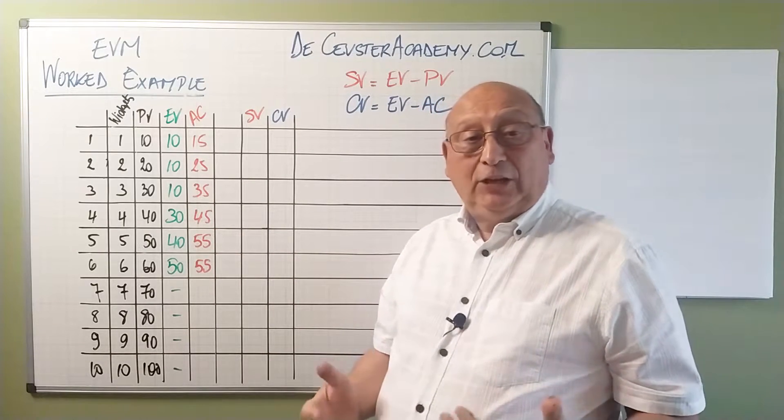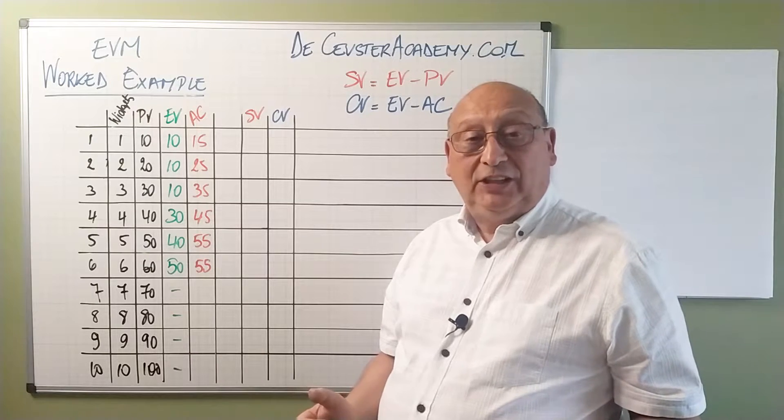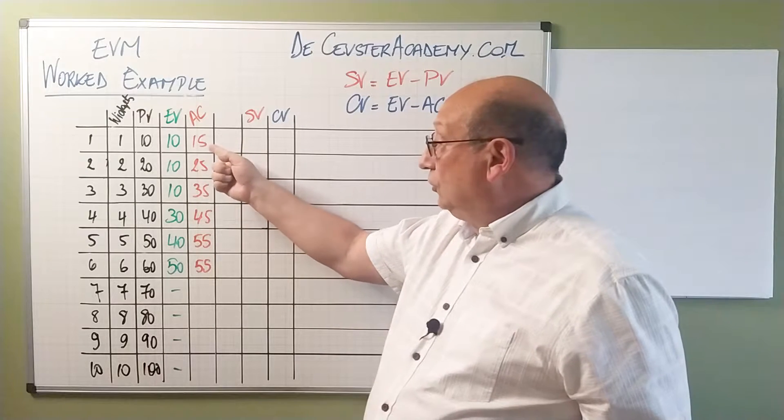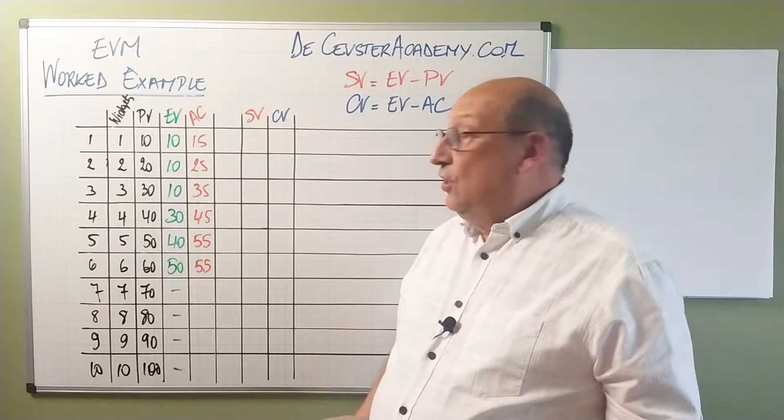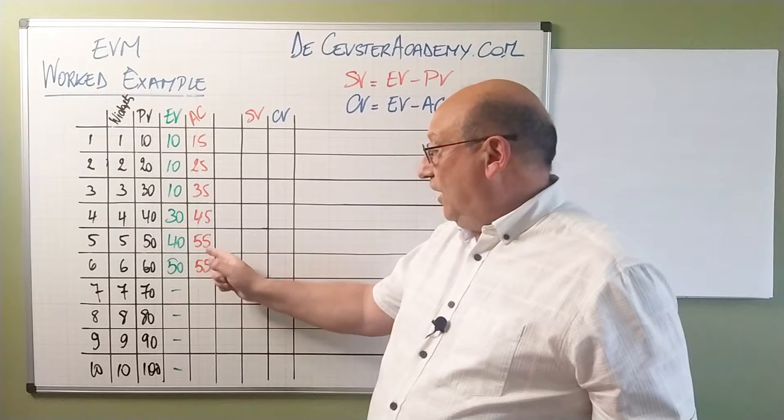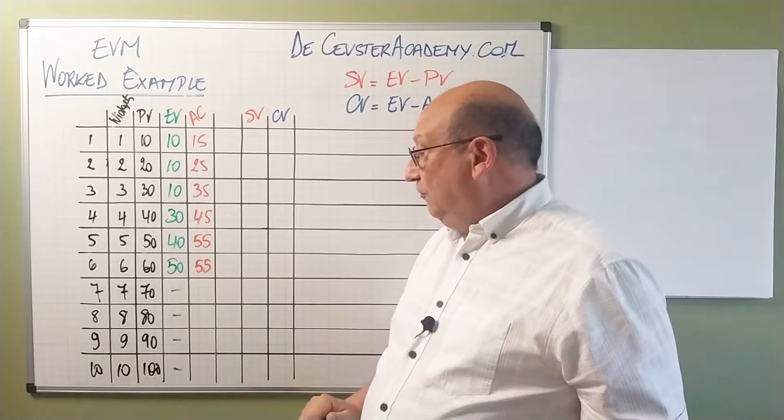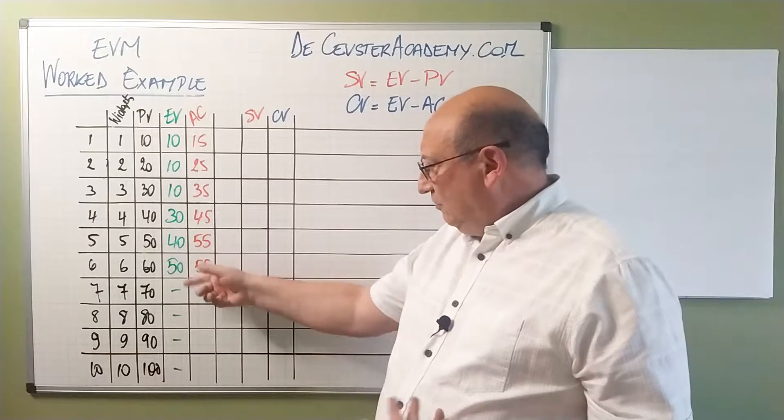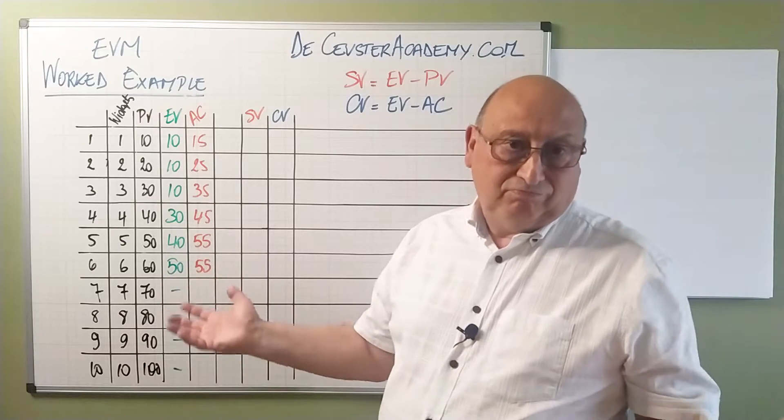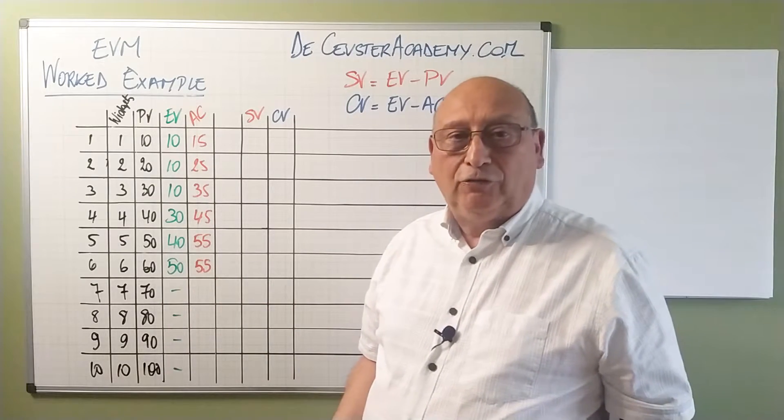The other information that we get from our project manager is the actual cost. The actual cost we find for period one 15, period two 25, 35, 45, 55, and 55. So the last period the actual cost didn't increase. There may be an explanation for that.